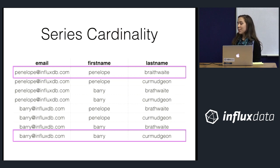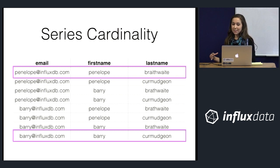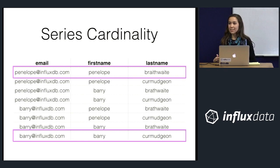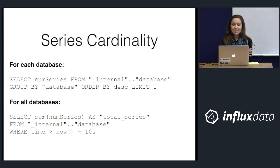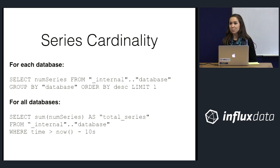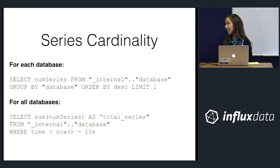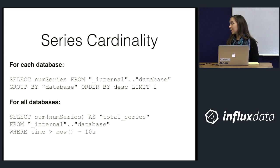The takeaway is that it's probably easiest to estimate series cardinality by calculating every single tag set combination per measurement and adding that up across measurements in the database — just know that process can lead to an overestimate due to dependent tags. If you want to query the database directly for your series cardinality, these two queries will do that: the first returns cardinality by database, the second returns cardinality across your entire instance.